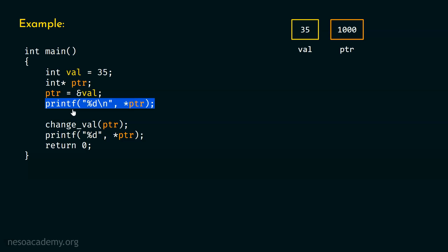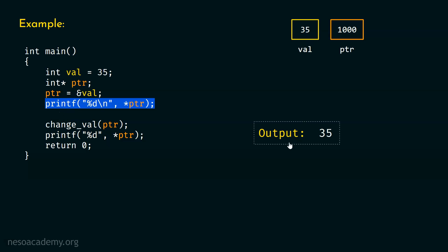After this, we have a printf function, and with the help of this printf function we are trying to print one integer value. Here you can see star ptr — we are trying to dereference this pointer. If we simply write ptr, then this will print 1000 instead of 35. But after putting star in front of it, we are trying to access what is there inside address 1000. We know address 1000 belongs to variable val, so with star ptr we access and print the value 35. The output of this program is of course 35.